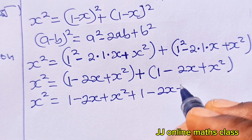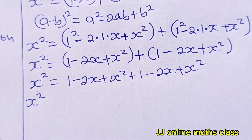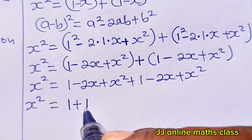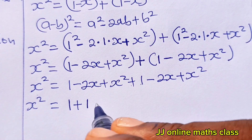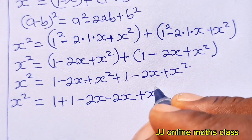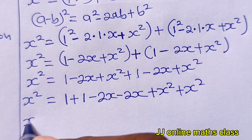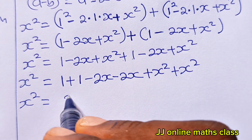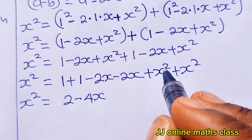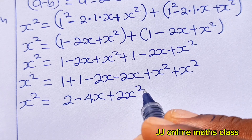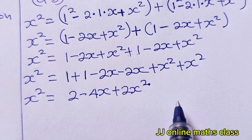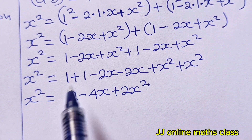Collecting like terms: x² = (1 + 1) + (−2x − 2x) + (x² + x²), which gives x² = 2 − 4x + 2x². Now we transfer everything to one side and equate to zero, because we are forming a quadratic equation.